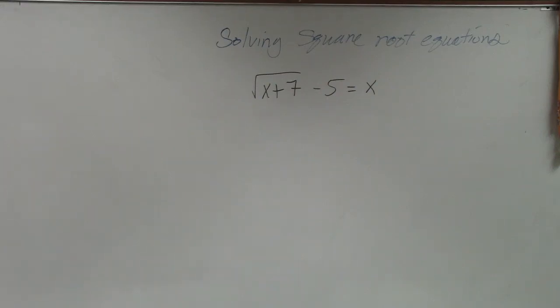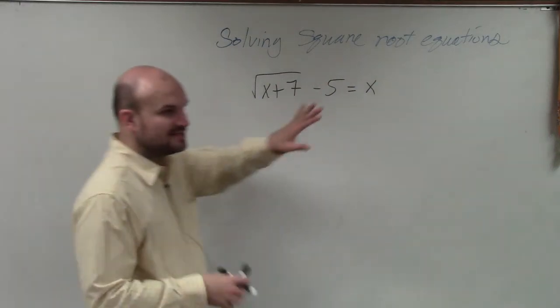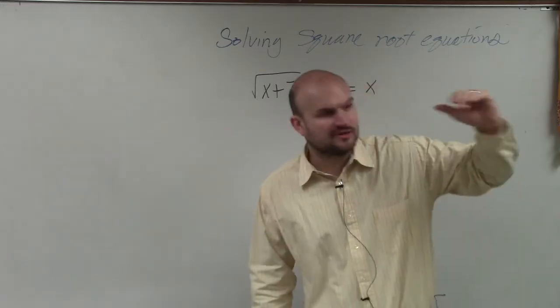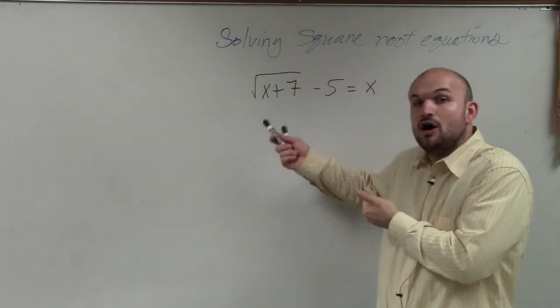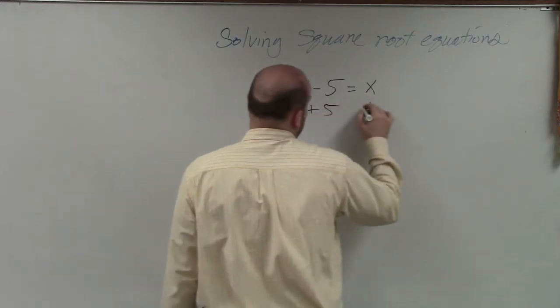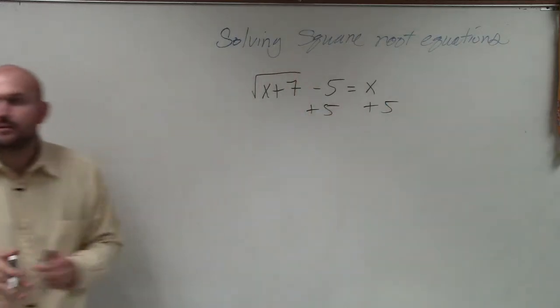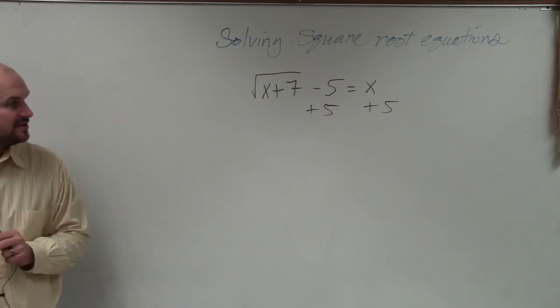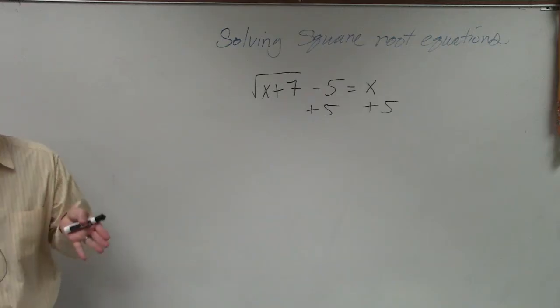So same exact problem. Now, everybody at least I think listened to my first step, which was when we need to solve for square root, we've got to isolate. So the first thing we're going to do is we're going to add a 5 to both sides. We got that pretty majority of students I saw went to go and do that.